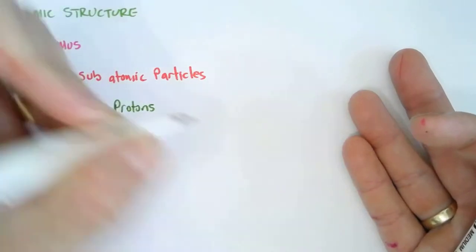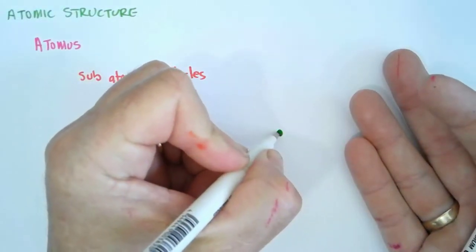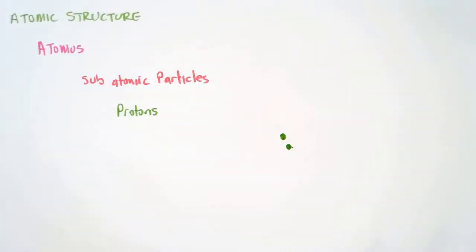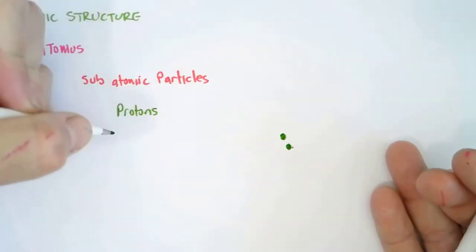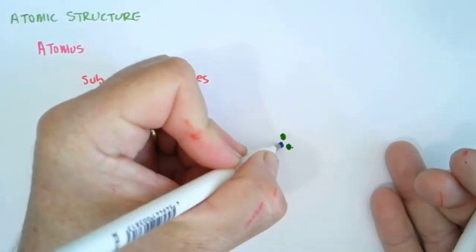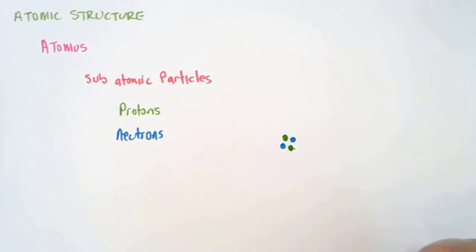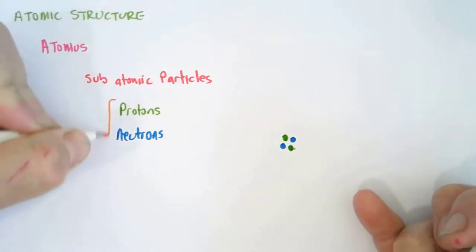Protons are in the nucleus of the atom along with another subatomic particle called a neutron. Neutrons are also in the nucleus of the atom. So both of those are in the nucleus of the atom.